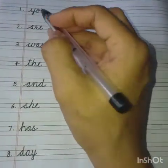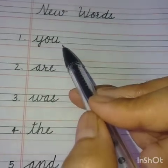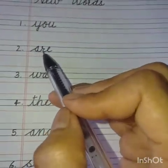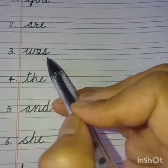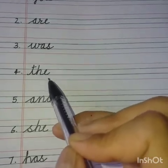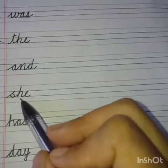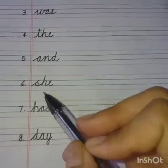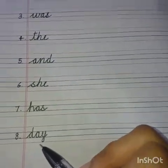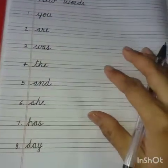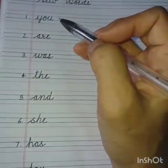Now repeat after me. You, are, was, the, and, she, has, day. These are three letter words. One, two, three. Three letter words. Okay?